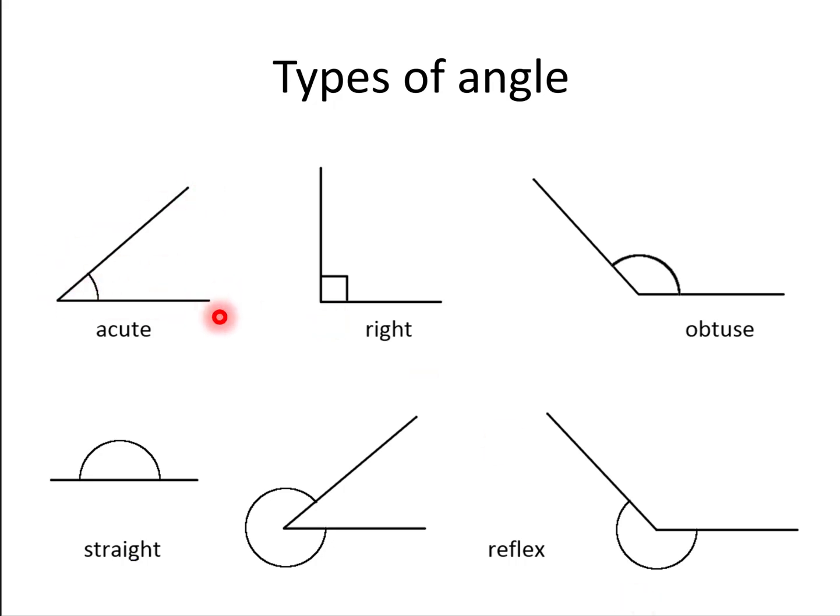There are many different types of angles. Acute is less than 90 degrees. Right angle is exactly 90 degrees. Obtuse is greater than 90 degrees but less than a straight line, which is 180 degrees. A straight line is 180 degrees, and a reflex angle is greater than 180 degrees, and the remaining part of the circle can either be an acute or an obtuse angle.